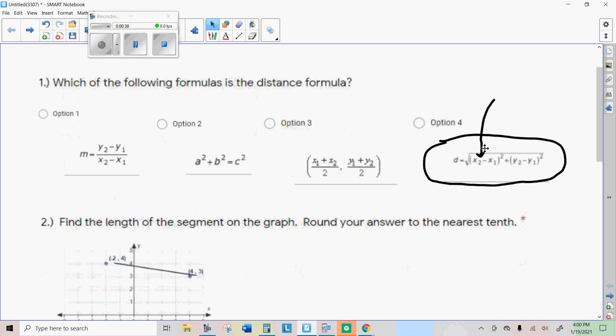When you see this x sub 2 minus x sub 1, that is the distance between the x coordinates, or the difference. And then this is the distance between the y coordinates, and those make the two legs of a right triangle. So, once you have those two legs, you square them. You can see the two right there. Add them together, and then you do the square root of that, because that's what you do in Pythagorean's theorem.